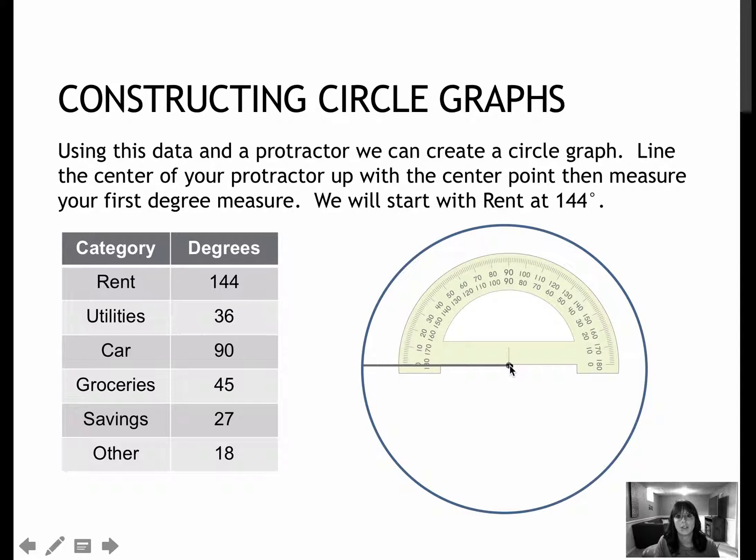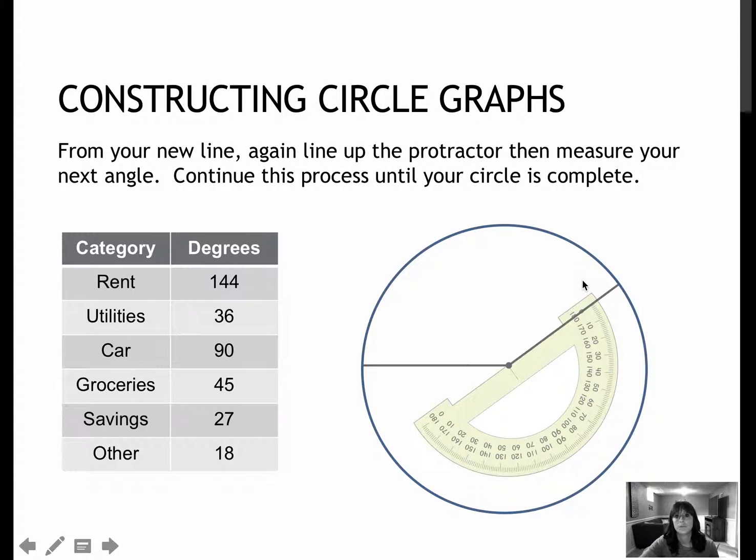So I've drawn a line to the left. You can start straight up. It doesn't really matter. But I'm going to start here, and I'm going to go 144 degrees. So from here, I'm going all the way over to 144. And then, of course, I would use a straight edge to make that straight line. So that is my line at 144.